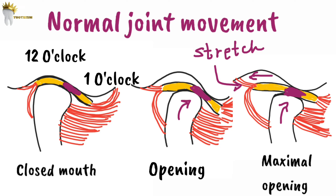The key point to remember is that in a normal joint, the thin intermediate zone of the disc is always interposed between the condyle and the temporal bone during all phases of opening and closing. This protects the articular surfaces when the joint is in function. Because of the constant contact of the condyle with the intermediate zone, there will be no friction between the condyle and the articular fossa.